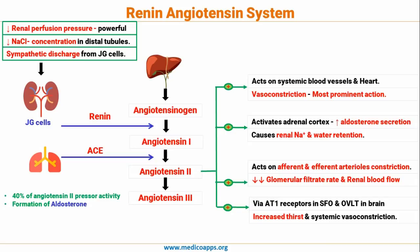Finally, angiotensin 3 is converted into angiotensin 4. That completes the renin-angiotensin system — covering renin production and the various actions of angiotensin 2.